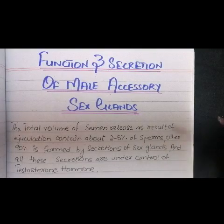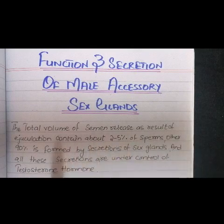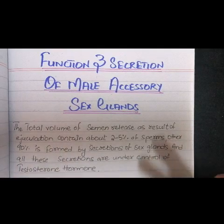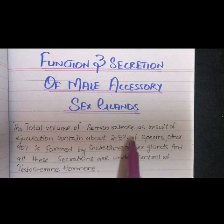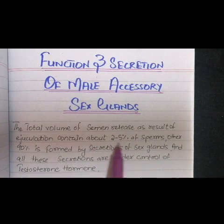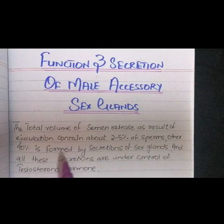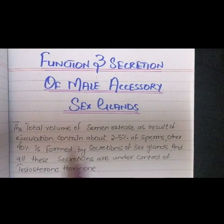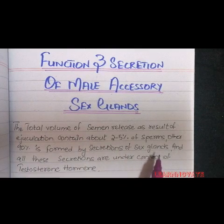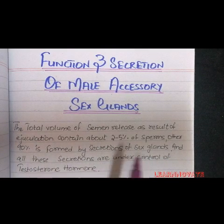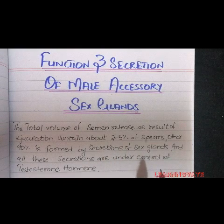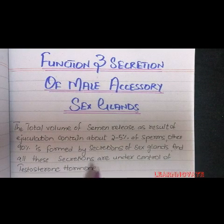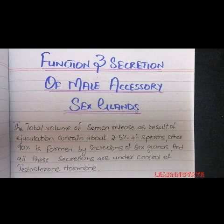Here you can see in these notes I have put up all these functions. The total volume of semen released contains about 2-5% sperms, while the other 90% is formed by the secretion of these accessory glands. All the secretions of these accessory glands — the prostate, seminal vesicles, and bulbourethral gland — are under the control of the male sex hormone testosterone.